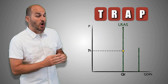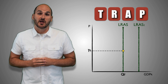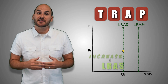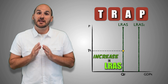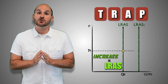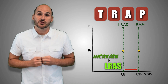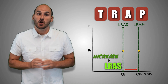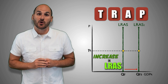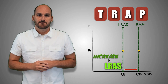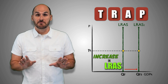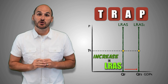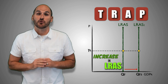A rightward shift of the long-run aggregate supply curve indicates that long-run aggregate supply has increased in the economy, and the economy now has the potential to produce a greater quantity of real GDP at full capacity, no matter the price level. Inflation or deflation? Doesn't matter. The domestic economy can now produce more real GDP at full employment.